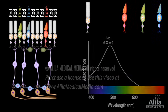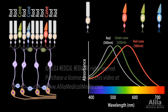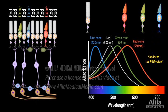There are three kinds of cones named after the color that they absorb best: red, green, and blue. A color is perceived based on proportions of signals coming from these cones. Color blindness occurs when a person lacks a certain kind of cone.